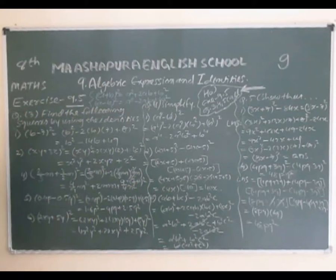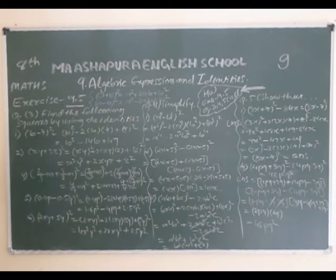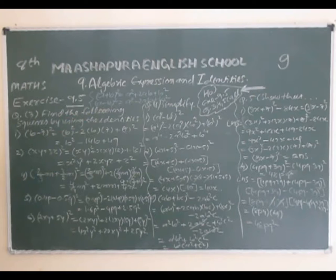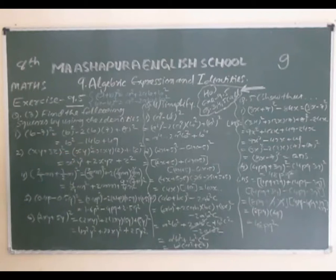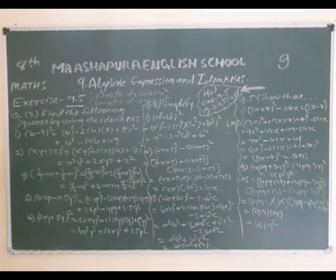(a + b)² = a² + 2ab + b². (a - b)² = a² - 2ab + b². So the question (b - 7)² is like the (a - b)² identity: first term squared minus 2 times first term times last term plus last term squared. b² - 2×b×7 + 7² = b² - 14b + 49.